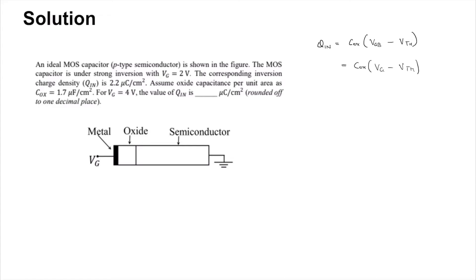that for VG equal to 2 volts, the inversion charge is 2.2 micro. So 2.2 micro equals Cox, which is 1.7 micro, times 2 minus VTH. From this you can find VTH,